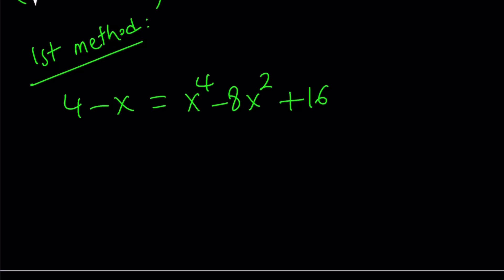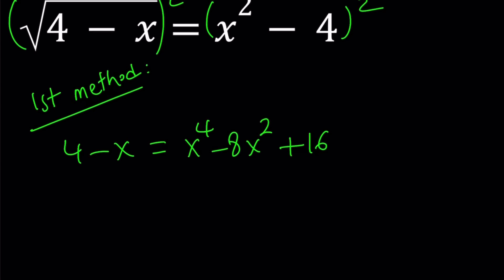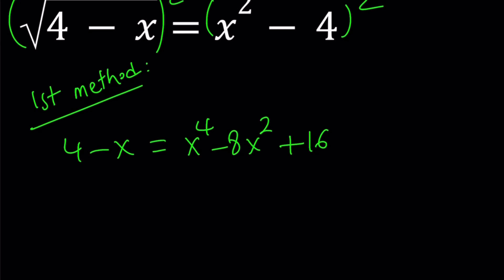Can that be done? Yes, because we have 4 and 16 together, which is nice. This method does not always work, but sometimes it does. So here's what we're going to do. The motivation behind this method is that solving a quadratic is a lot easier than a quartic, and this can be turned into a quadratic. We're going to call 4 the variable a, so 16 will become a squared and 8 will become 2a.